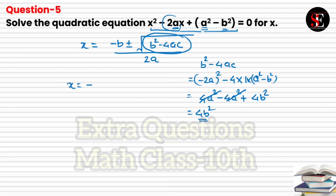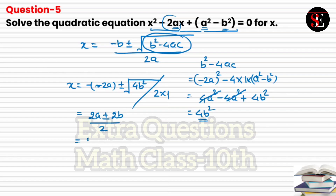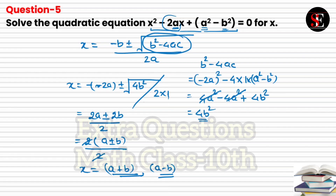Now substituting into the formula: x = [2a ± √(4b²)] / 2 = [2a ± 2b] / 2. Taking 2 common in the numerator and cancelling with the denominator: x = a ± b. So the two values of x are a + b and a − b. That is the answer. This is how we solve such problems. See you in the next video with more problems — keep studying!